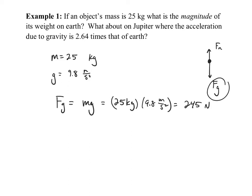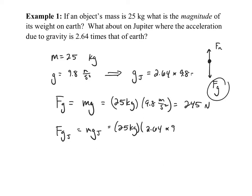For Jupiter, we take 2.64 and multiply it by g. So g on Jupiter is 2.64 times 9.8. The same process applies: Fg on Jupiter equals mg on Jupiter, which is 25 kilos times 2.64 times 9.8 meters per second squared, giving us 646.8 newtons. Interestingly, we could have just multiplied 245 times 2.64 to get this answer directly.